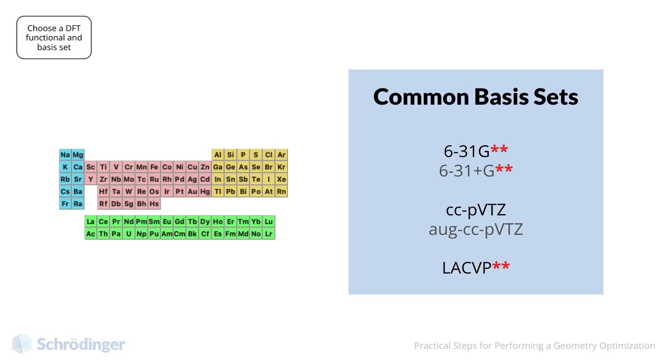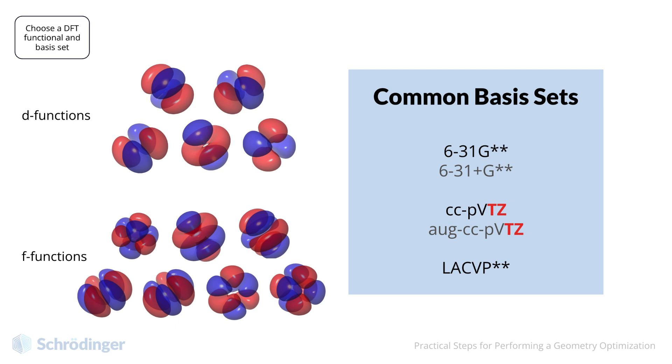You will also see combinations of letters DZ, TZ, and QZ, and sometimes even 5Z. D, T, Q, and 5 stand for double, triple, quadruple, and quintuple. Going from DZ to 5Z, we add more polarization functions. For example, for element carbon, a basis set with DZ might include d function as the most complex polarization function. For TZ, the most complex function is f. For QZ, it is g, etc.